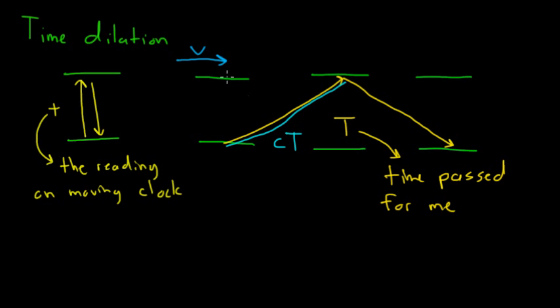Then we can also look at how far has the mirror moved in that same amount of time. Well, the mirror is moving at a velocity V, and for an amount of time capital T. So this is going to be a distance V times T.